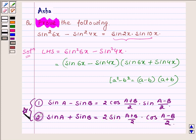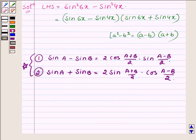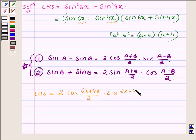So with the help of these two identities, LHS can further be written as 2cos((6x+4x)/2)·sin((6x-4x)/2).